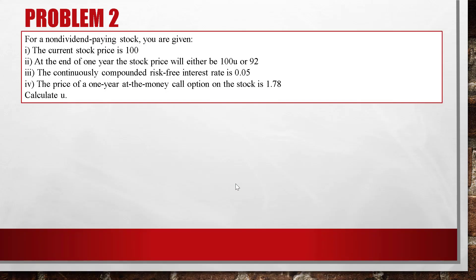Problem 2. For a non-dividend paying stock, you are given: the current stock price is 100, at the end of one year the stock price will be either 100u or 92, the continuously compounded risk-free interest rate is 0.08, and the price of a one-year at-the-money call is $1.78. Calculate u.